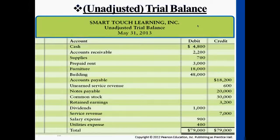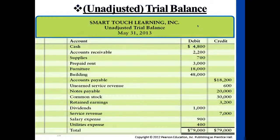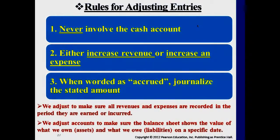Each transaction either affects a type of revenue or expense, and at the same time another type of asset and liability. This is what an unadjusted trial balance looks like from Chapter 2. We will be adding to this unadjusted trial balance some adjustments — adding a few more columns to the right-hand side after you understand what adjusting entries are. This information from Chapter 2 is still there; we're just expanding the columns to the right side.